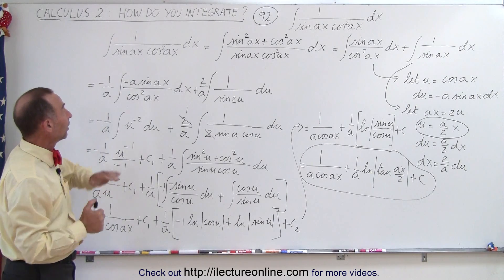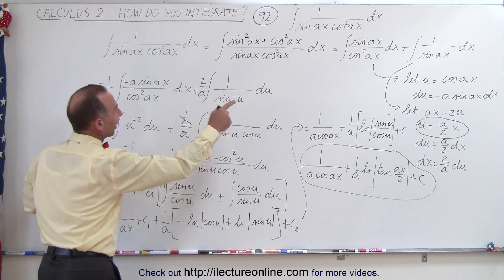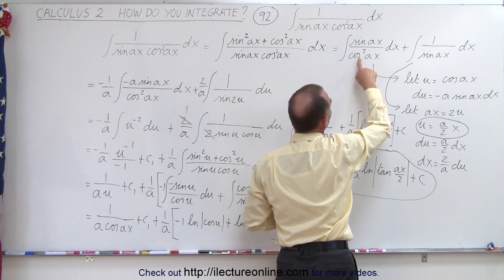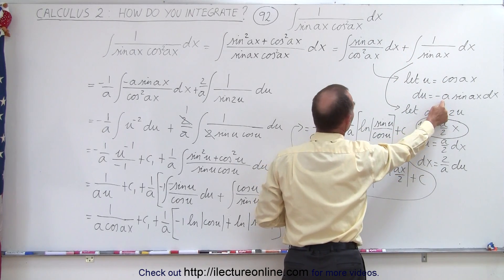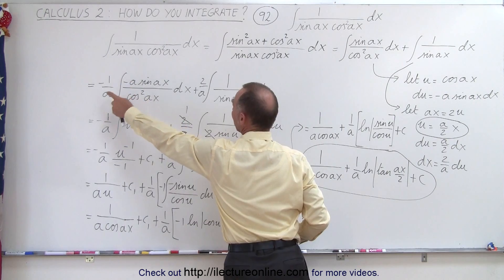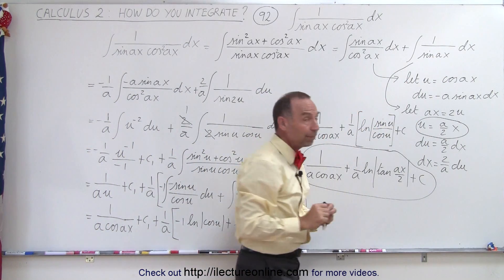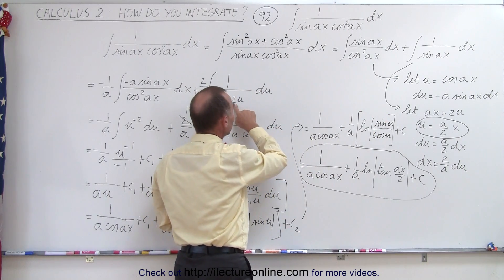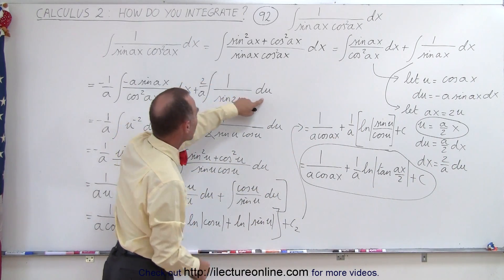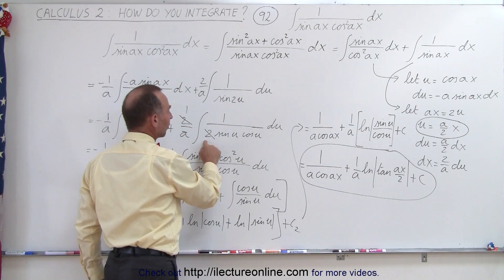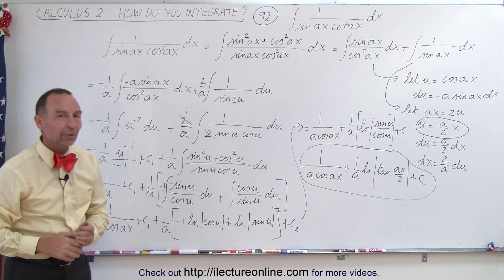Summarizing what we just did: just like in the previous video, we changed the 1 to the sum of sine squared plus cosine squared. When we simplified, the first part could easily be integrated by treating the denominator as U or U squared, with the numerator being almost a differential — we simply needed a minus A and accounted for it. For the second integral, we had 1 over the sine of AX, which was problematic. So we changed AX to 2U, DX became 2 over A DU, then wrote sine of 2U as twice the product of sine U times cosine U. With the integral in that format, we used the same trick as before to integrate the second integral as well. And that's how it's done.